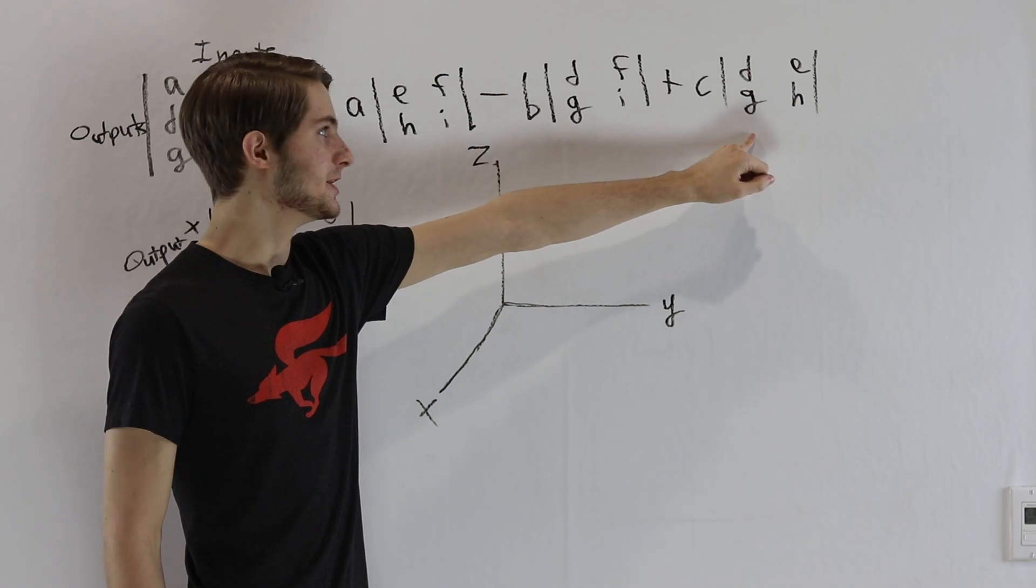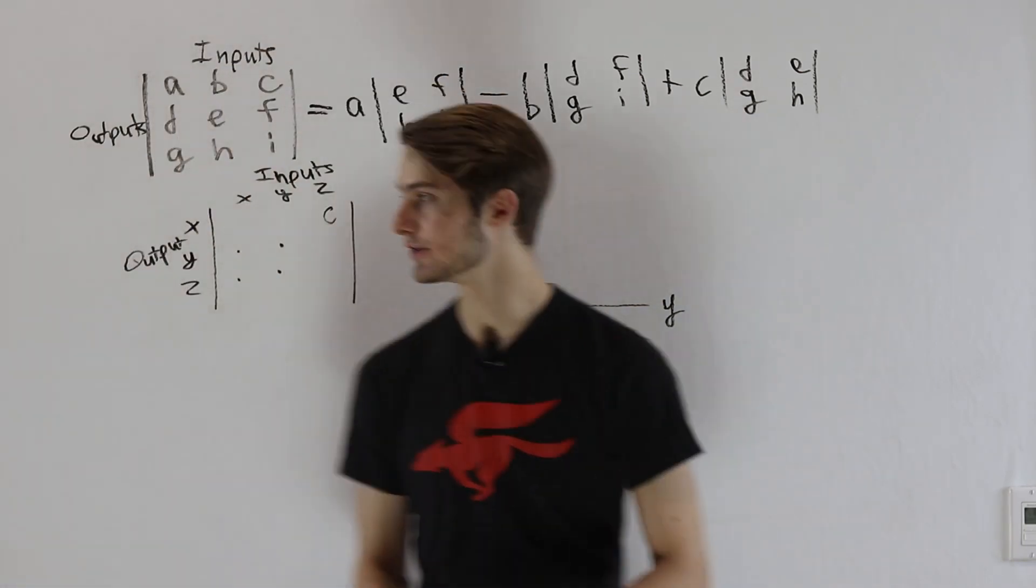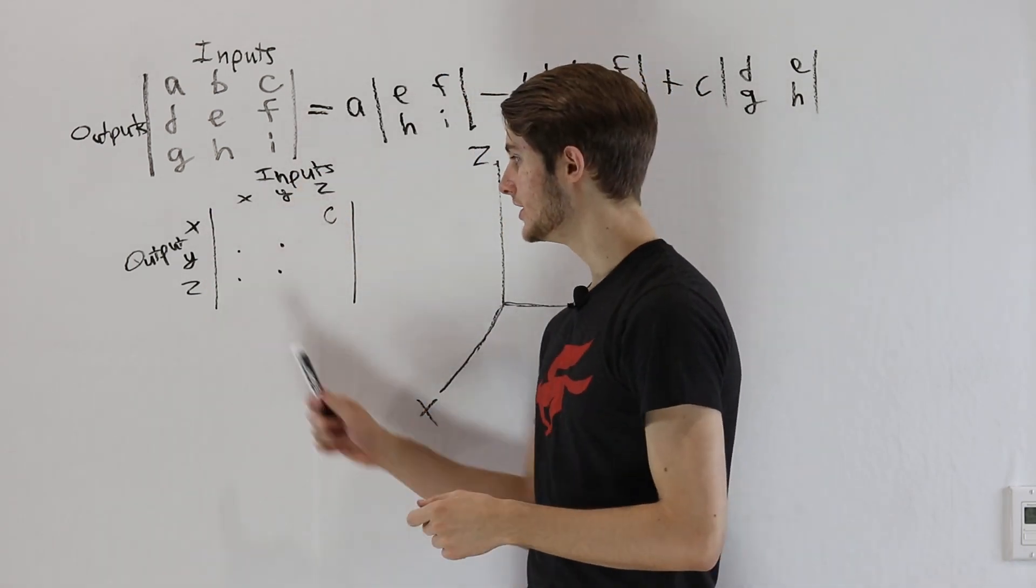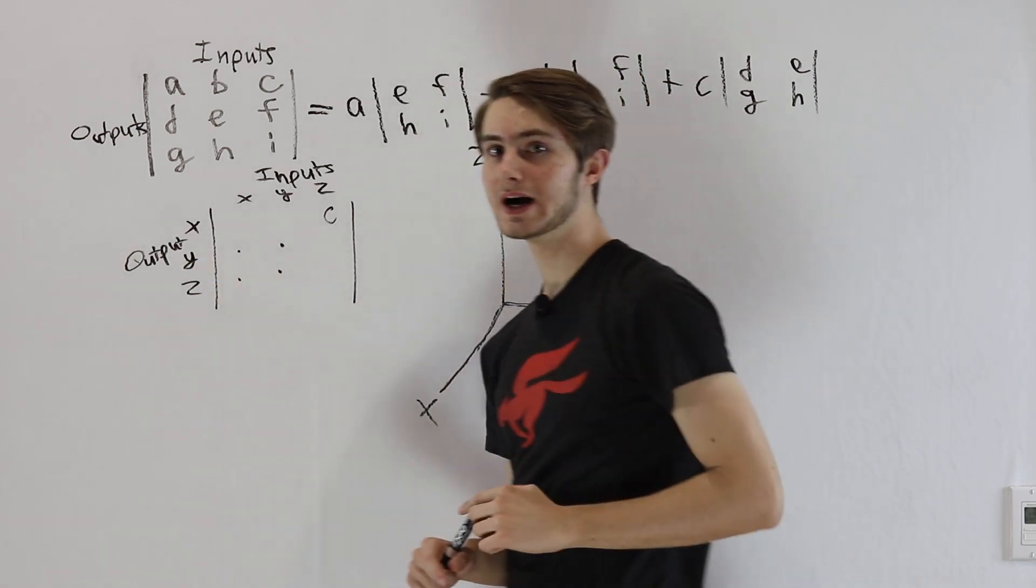Now, this third term here is going to have a similar effect to the second term. So let's take a look at what that means in the matrix. We have a z input going to an x output, and then we have this determinant, which is x, y being mapped to y, z.